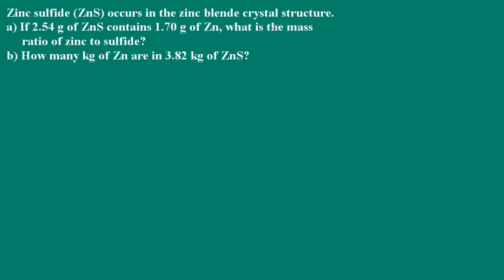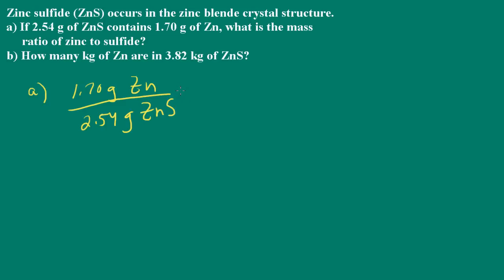Zinc sulfide occurs in the zinc blende crystal structure. Part A asks us: if 2.54 grams of zinc sulfide contains 1.7 grams of zinc, what is the mass ratio of zinc to sulfide? In order to find the mass ratio of zinc to sulfide, we divide the mass of zinc by the mass of the zinc sulfide compound. So we have 1.7 grams of zinc divided by 2.54 grams of zinc sulfide, and we end up with a mass ratio of 0.669. That's zinc to zinc sulfide.